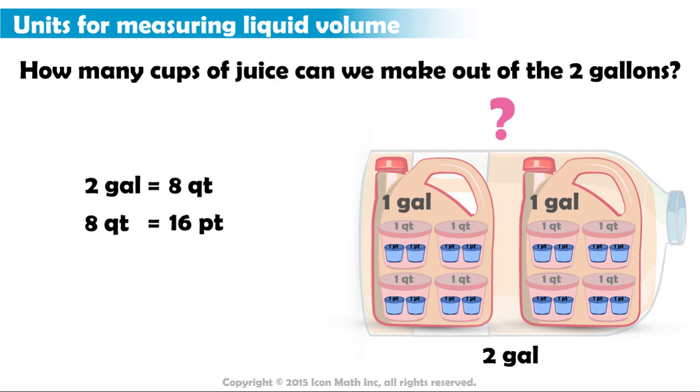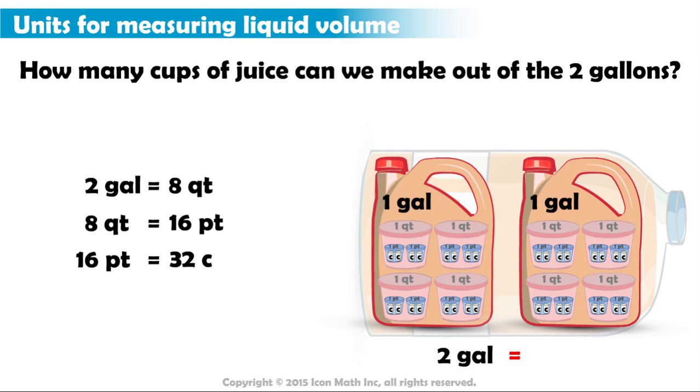Finally, how many cups are there in one pint? A pint has two cups. And we have sixteen pints. So, sixteen times two equals thirty-two cups. So, in two gallons, there are thirty-two cups.